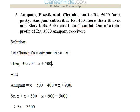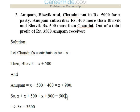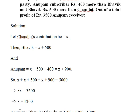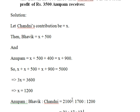Bhavik has contributed 500 more than Chandni, so X + 500. Anupam is 400 more than Bhavik, so X + 500 + 400 = X + 900. Adding all three contributions equal to 5000: X + (X + 500) + (X + 900) = 5000, so 3X = 3600, giving X = 1200. That is Chandni's contribution. Bhavik has contributed 500 more, so 1700, and Anupam 400 more than Bhavik, so 2100.